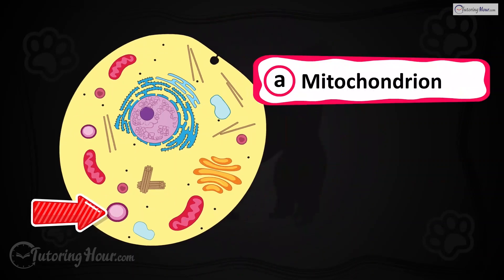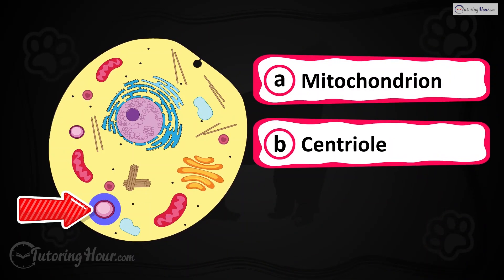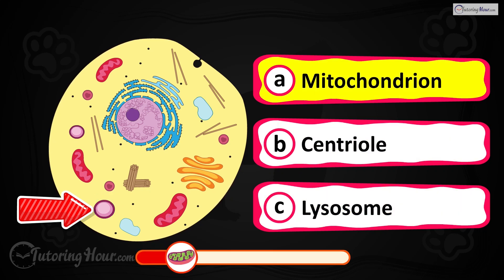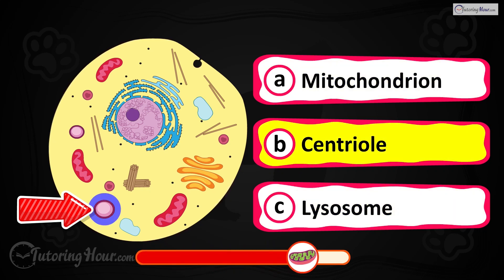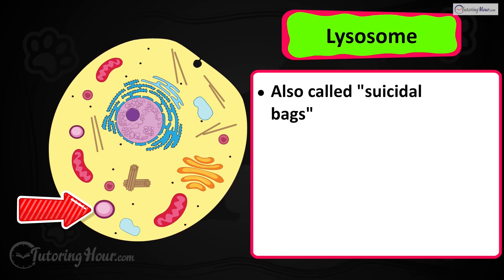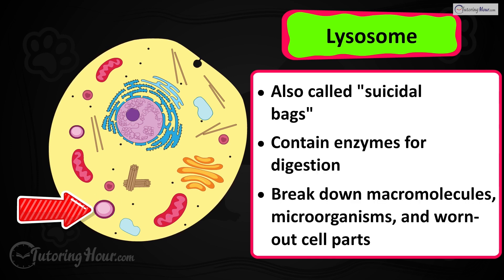Can you identify the highlighted part in the cell? Is it A) mitochondrion, B) centriole, or C) lysosome? The correct answer is the lysosome. Lysosomes are also called the suicidal bags. They contain enzymes to digest macromolecules, microorganisms, and old worn-out cell parts.